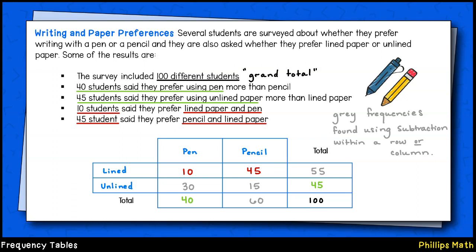For the remaining values, which I've shown in gray, we will need to complete the puzzle using subtraction. We know 10 plus 45 must equal the margin total 55. We also know 10 plus 30 must equal the margin total 40. From there, we can fill in 40 plus 60 equals 100. Last, we fill in 30 plus 15 equals 45.